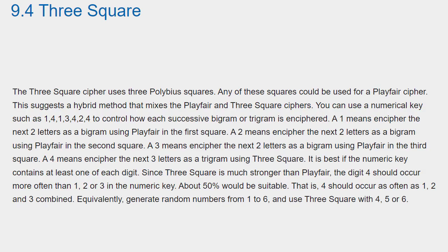Playfair Three Square. The Three Square cipher uses three Polybius squares. Any of these squares could be used for a Playfair cipher. This suggests a hybrid method that mixes the Playfair and Three Square ciphers. You can use a numerical key such as 1-4-1-3-4-2-4 to control how each successive bigram or trigram is enciphered.